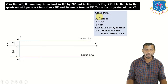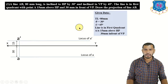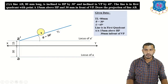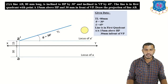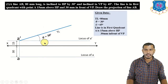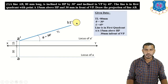After marking a-dash and a, draw a line at the true length of 80 mm at angle theta from a-dash. Since the line is in the first quadrant, point B will also remain in the first quadrant, so we get the elevation of point B above XY and plan of B below XY. Draw the line inclined at 30 degrees (theta) upward from a-dash to get b1-dash.